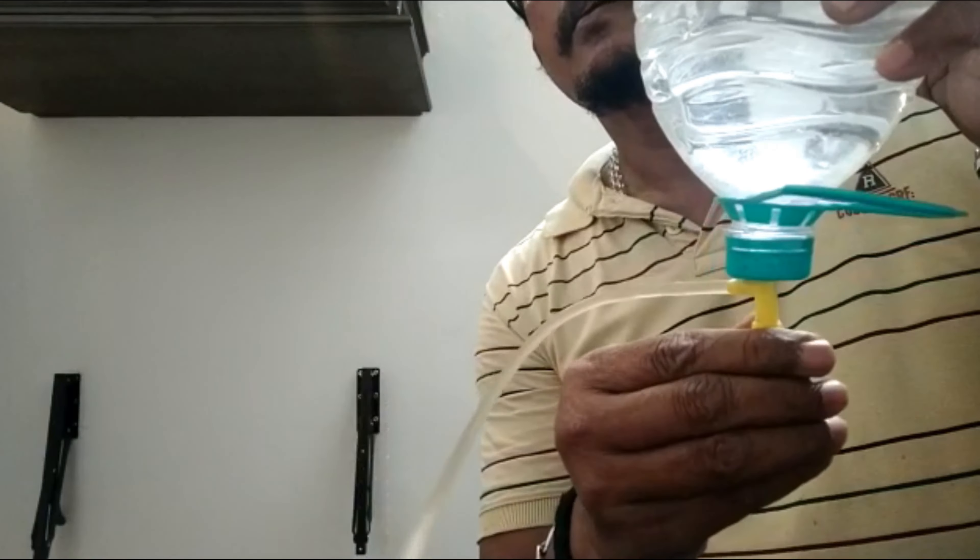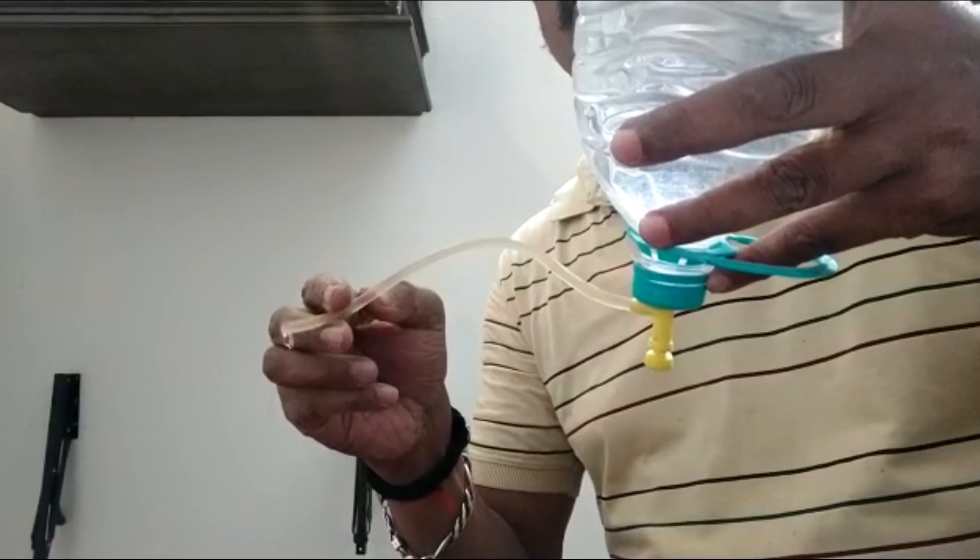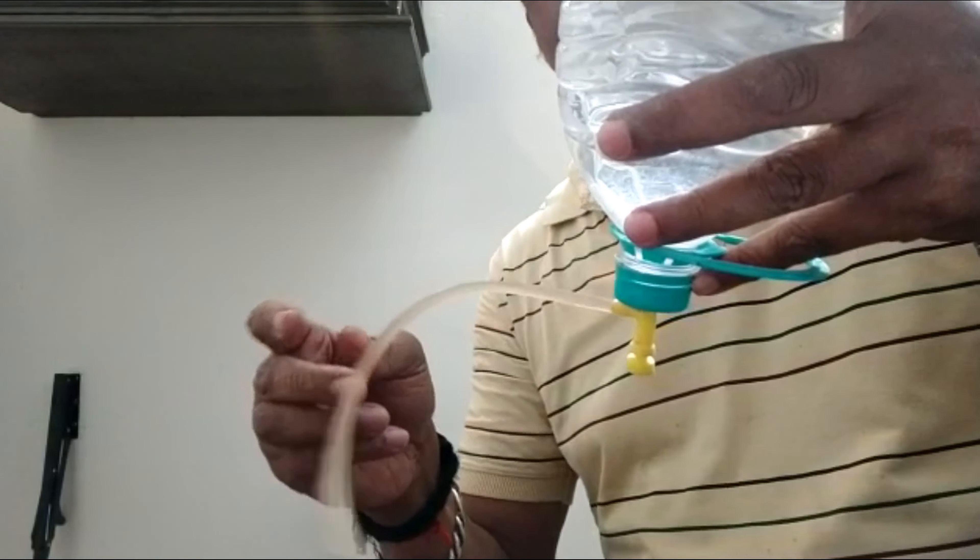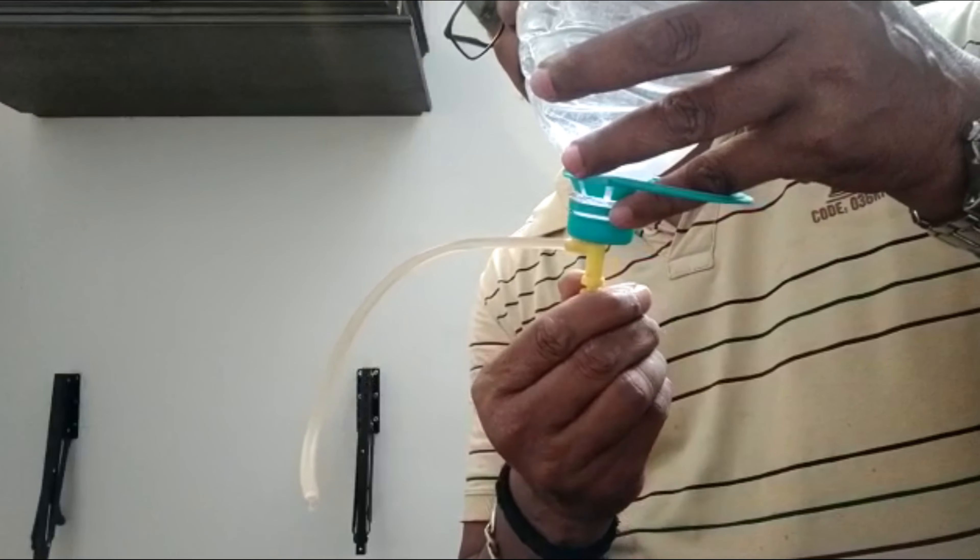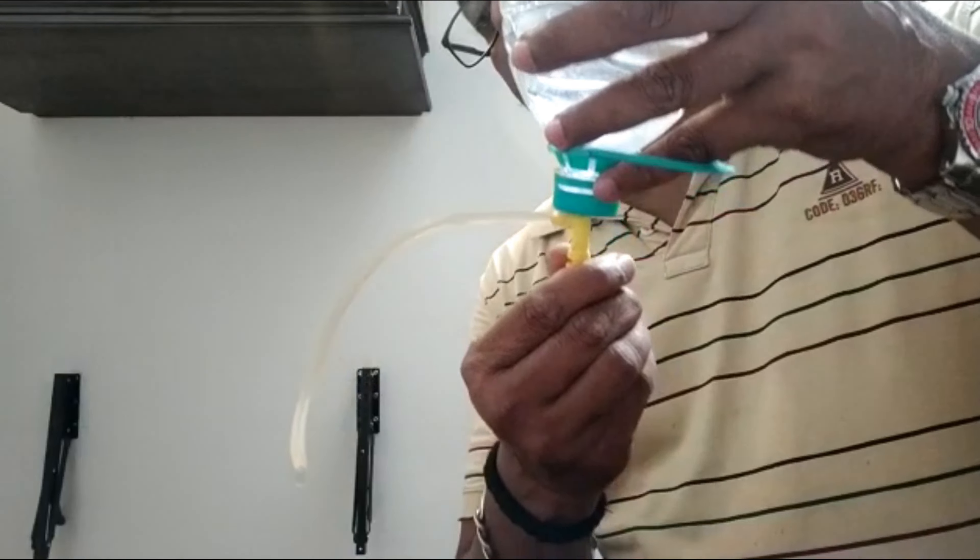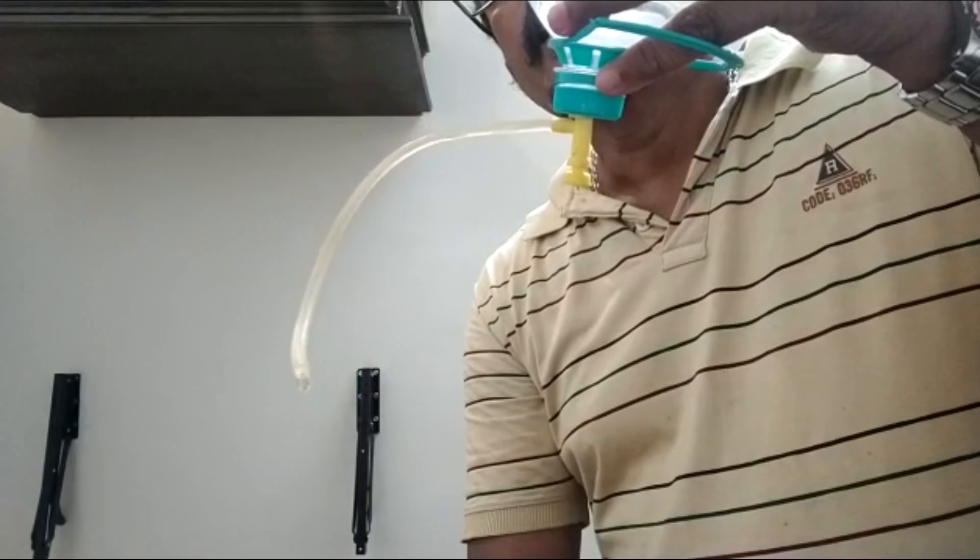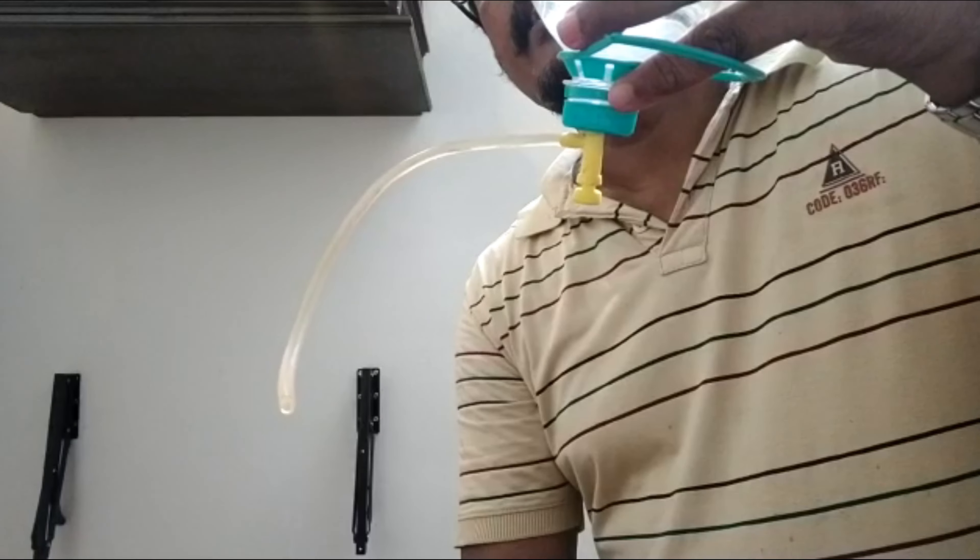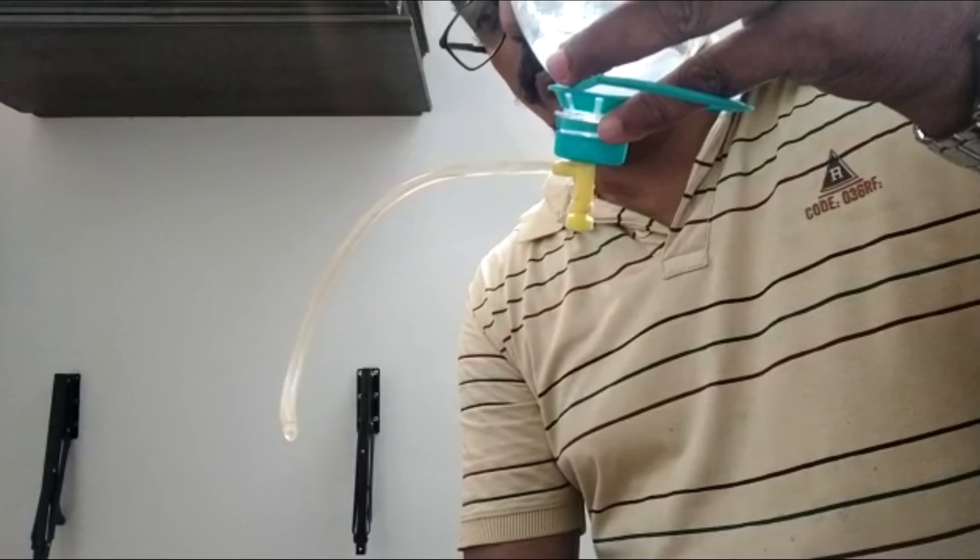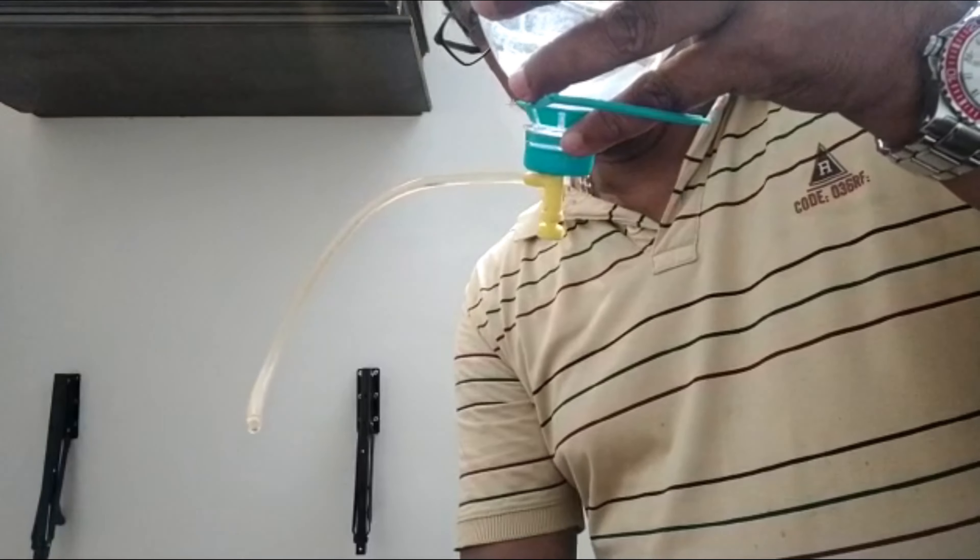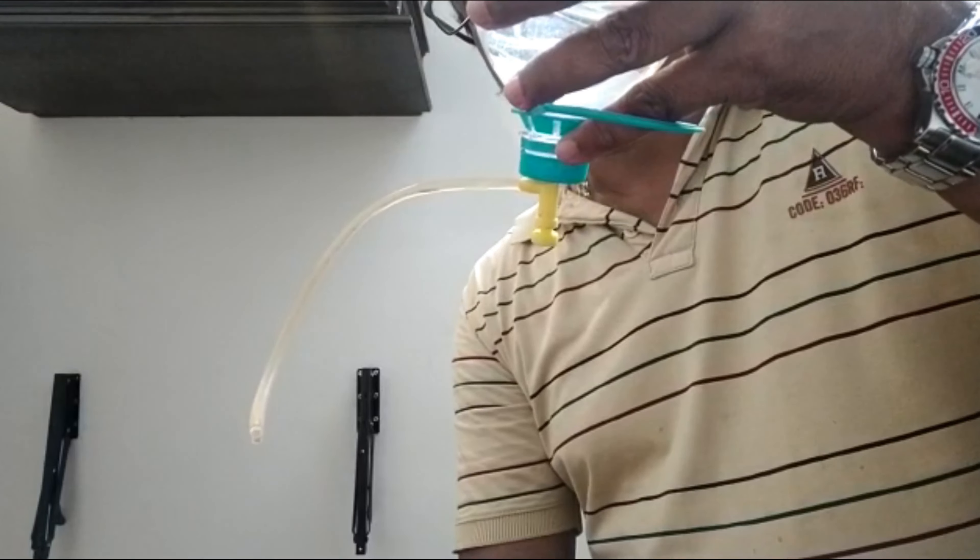You can see the water dripping. You can adjust the water as required. If you tighten it, the water speed will reduce and you can regulate it. If you fill one bottle full with two liters, the drip system will last for almost eight hours.